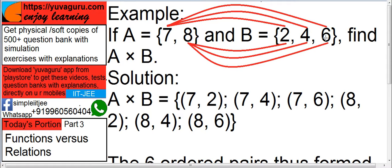7 with 2, 7 with 4, 7 with 6, 8 with 2, 4 and 6. See here, (7, 2), (7, 4), (7, 6). Similarly, (8, 2), (8, 4), (8, 6). You can put comma also, instead of this semicolon. So, the final output of A cross B is all these elements.